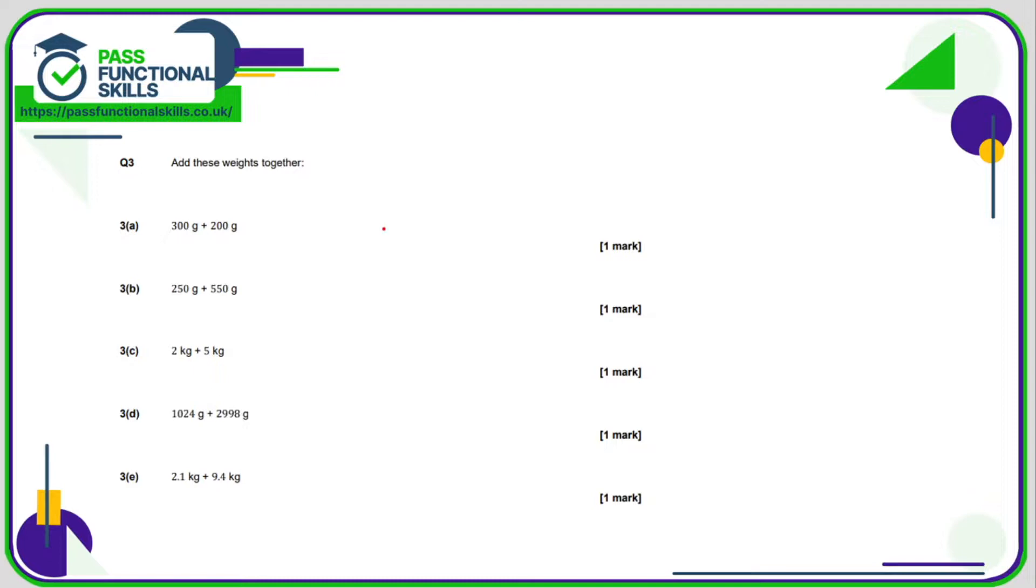Question number three. We're allowed to use a calculator for this question. Although some of them are dead easy. Like the first one. 300 plus 200 is 500. 250 probably should put grams there as well. That's 800 grams. 7 kilos. Definitely don't need a calculator for that one.